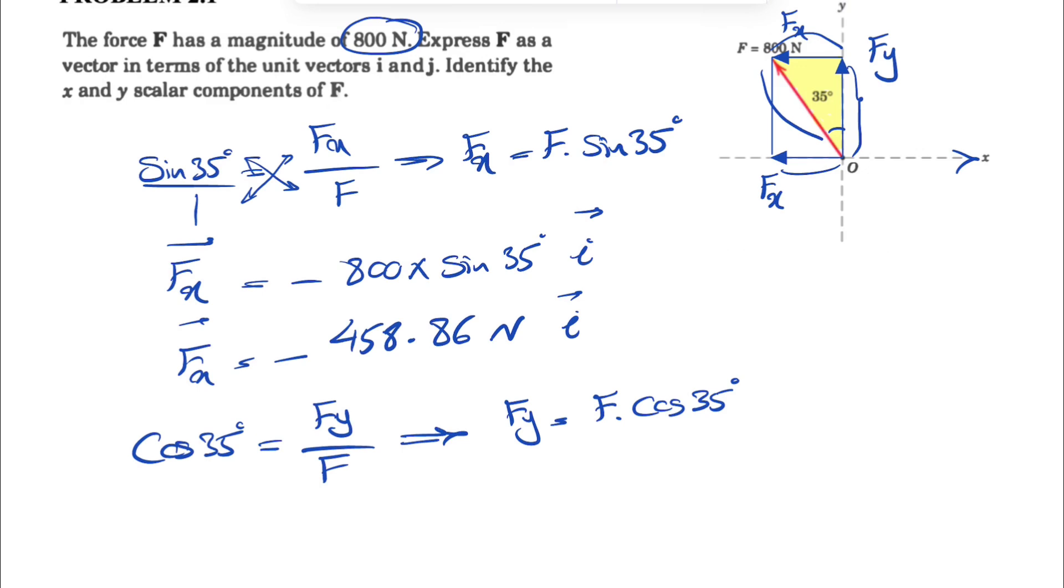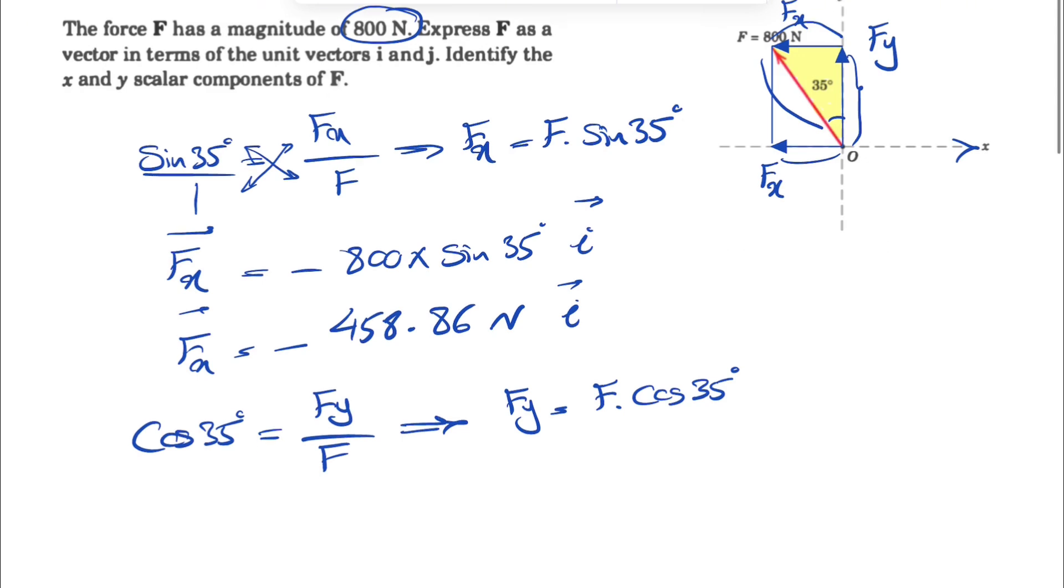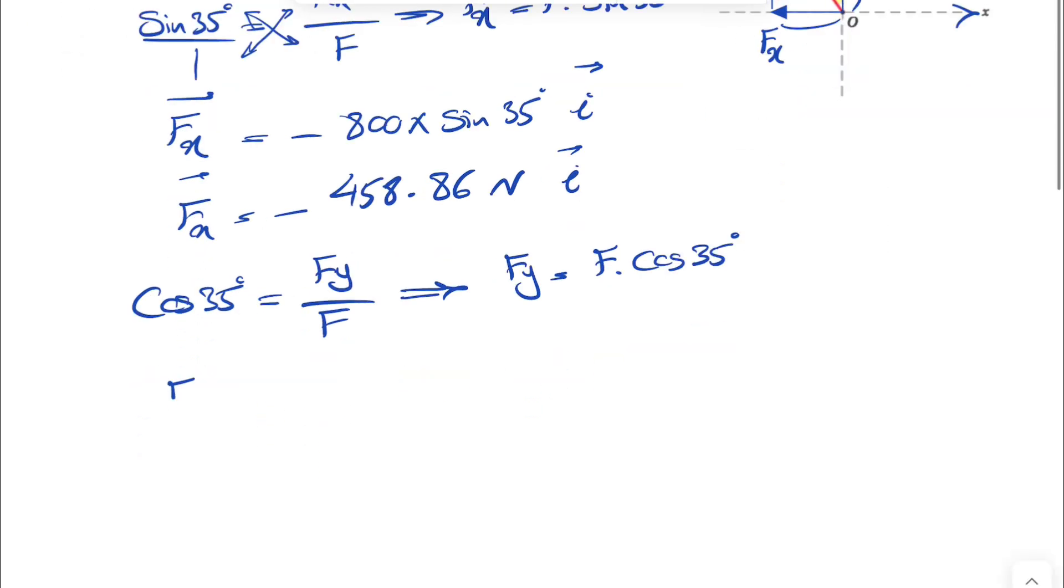Looking at Fy, we'll see that Fy is actually acting along the positive y axis. So Fy would be positive 800 times cosine of 35 degrees, and our unit vector would be j.